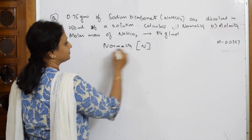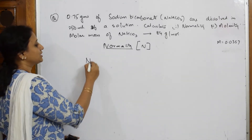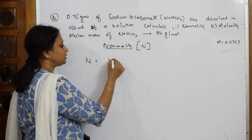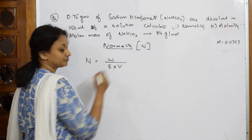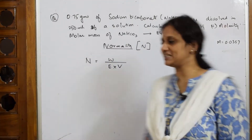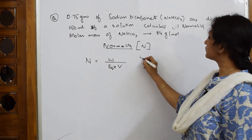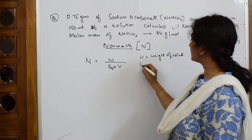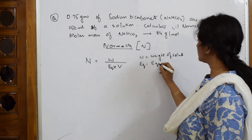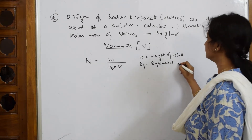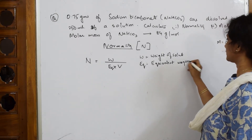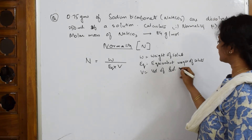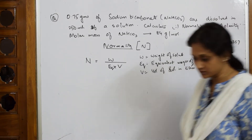Normality is denoted by capital N. The formula, written in short form, is N = w / (eq × v). Here, w stands for weight of solute, eq stands for equivalent weight, and v stands for volume of solution in liters.